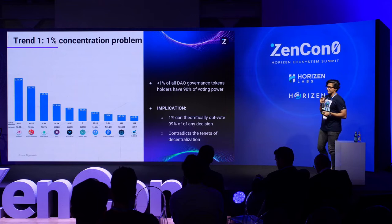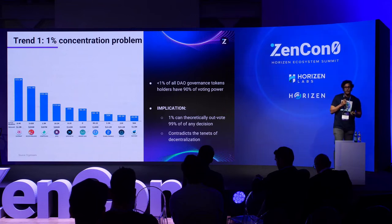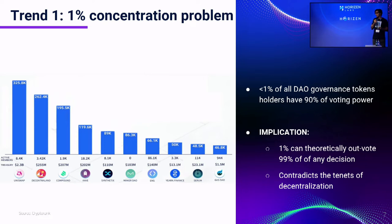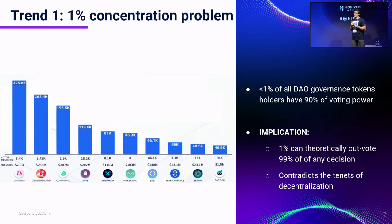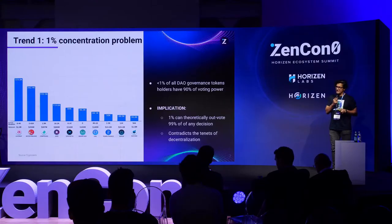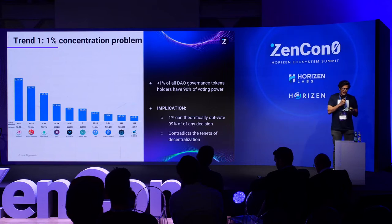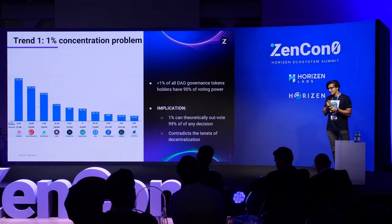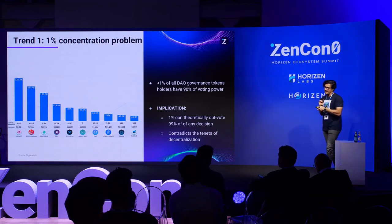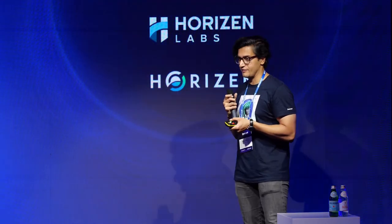Trend number one that is pretty evident is the concentration problem. What you're seeing on the left is some of the top 10 DAOs in market today, and what's starkingly and alarmingly clear is that less than 1% of all DAO governance token holders have 90% of voting power. That's massive — it goes against the essential baseline ethos of decentralization to begin with. That means 1% of those token holders can essentially outvote 99% of the ecosystem on any given decision, which contradicts the tenets of decentralization.